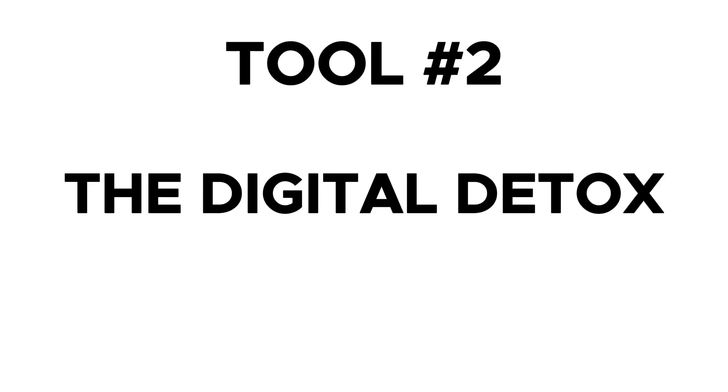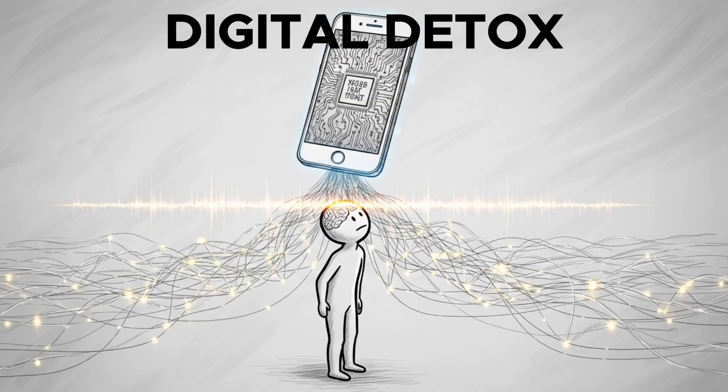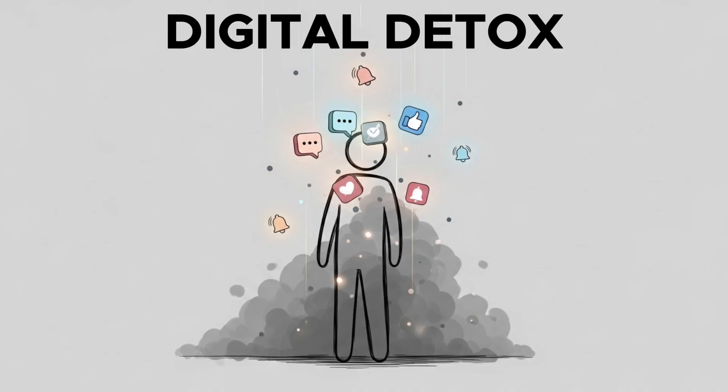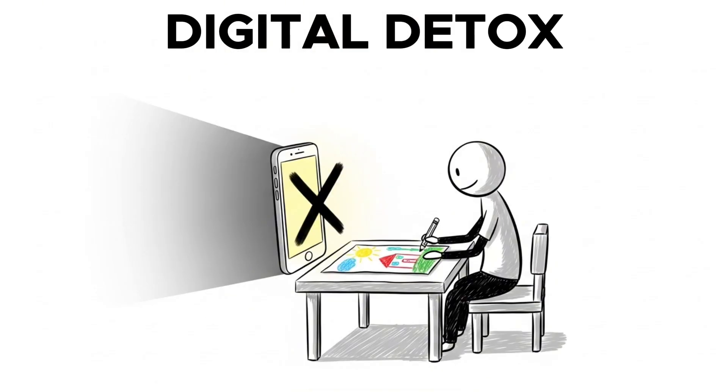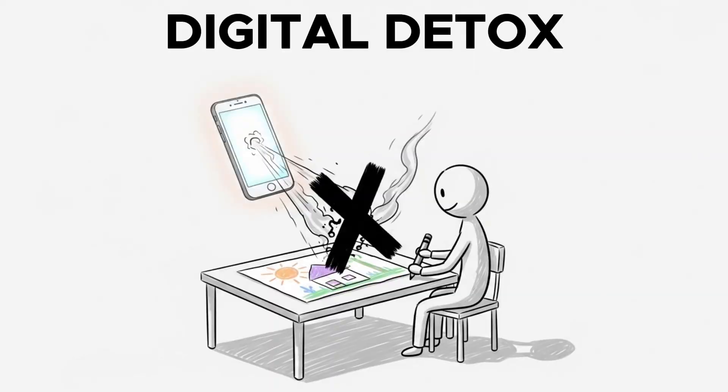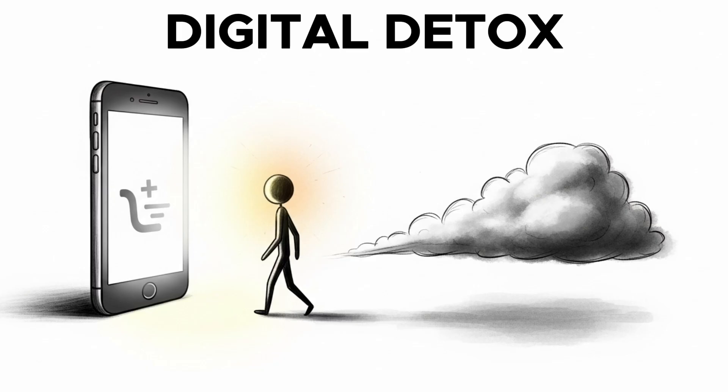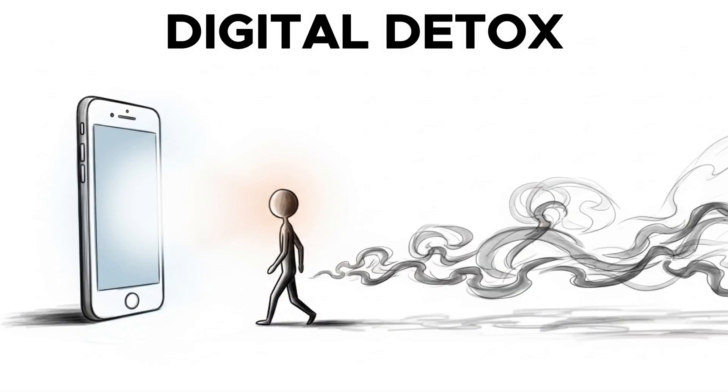Tool number two, the digital detox. Your smartphone is a dopamine layering machine. Texting during a workout, scrolling at dinner, checking notifications while studying. Each is a micro hit that collectively desensitizes your dopamine baseline. It's not just a distraction, it's a direct assault on your ability to find pleasure in the core activity itself. The initial discomfort of leaving your phone behind is your brain resetting. It's the moment the reward comes from the activity, not the device.